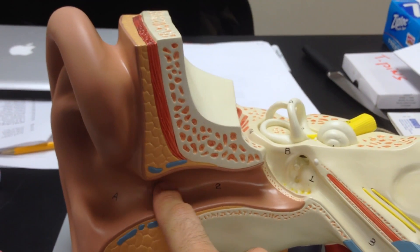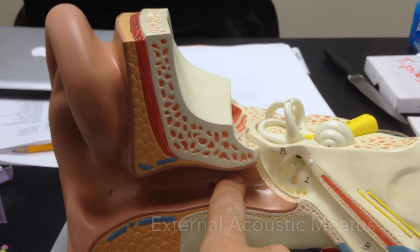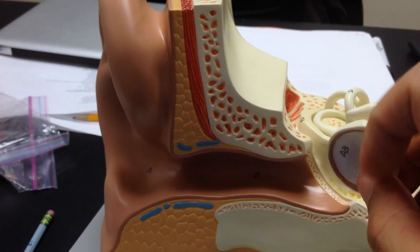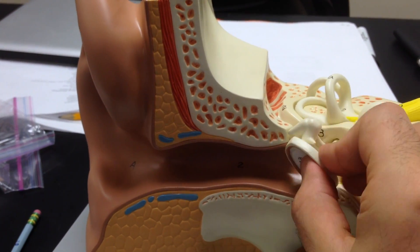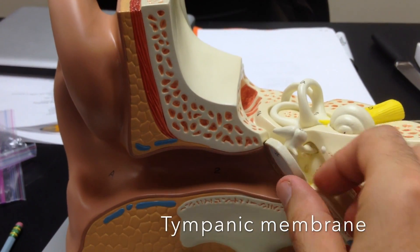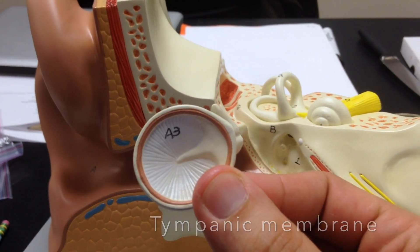Then I go into this tube here, which is your external acoustic meatus. At the end of the external acoustic meatus, we have this piece here. This drum here is the eardrum, also known as tympanic membrane.